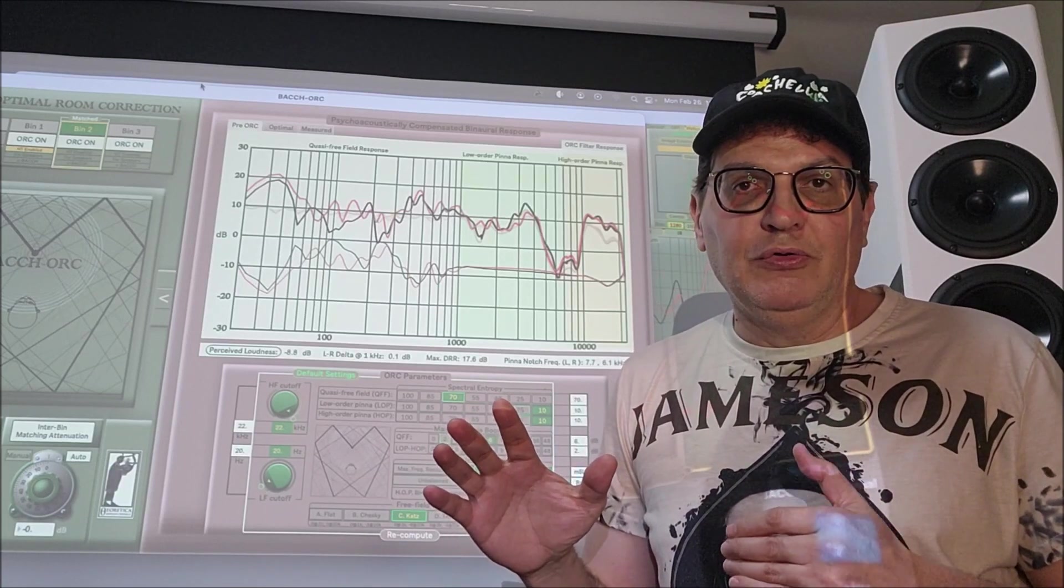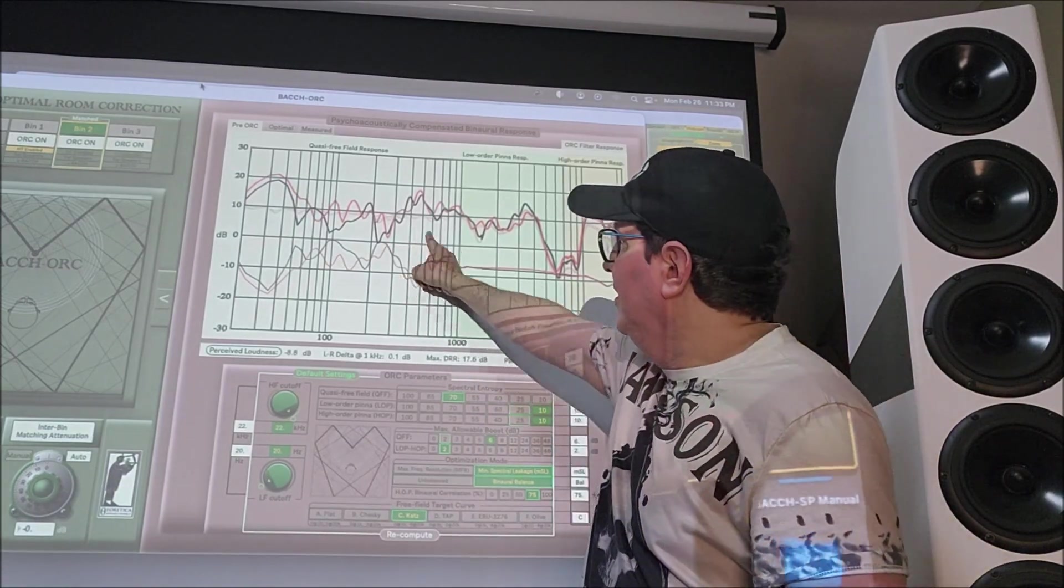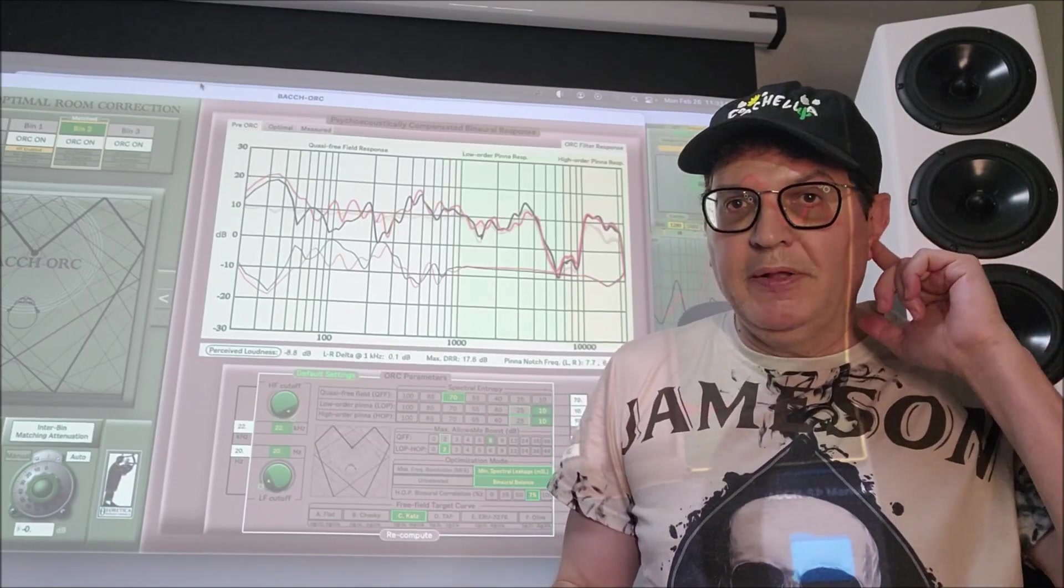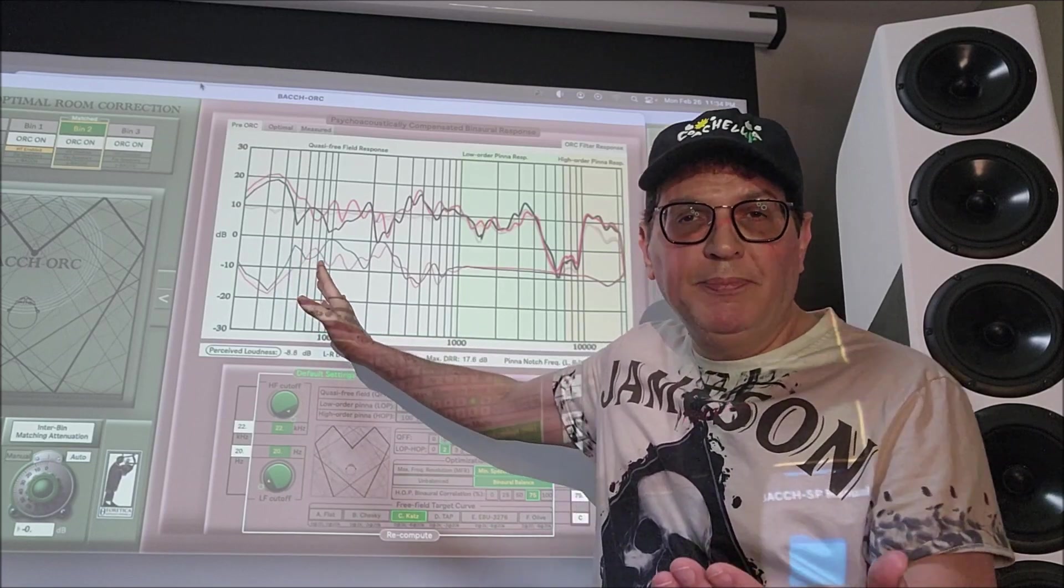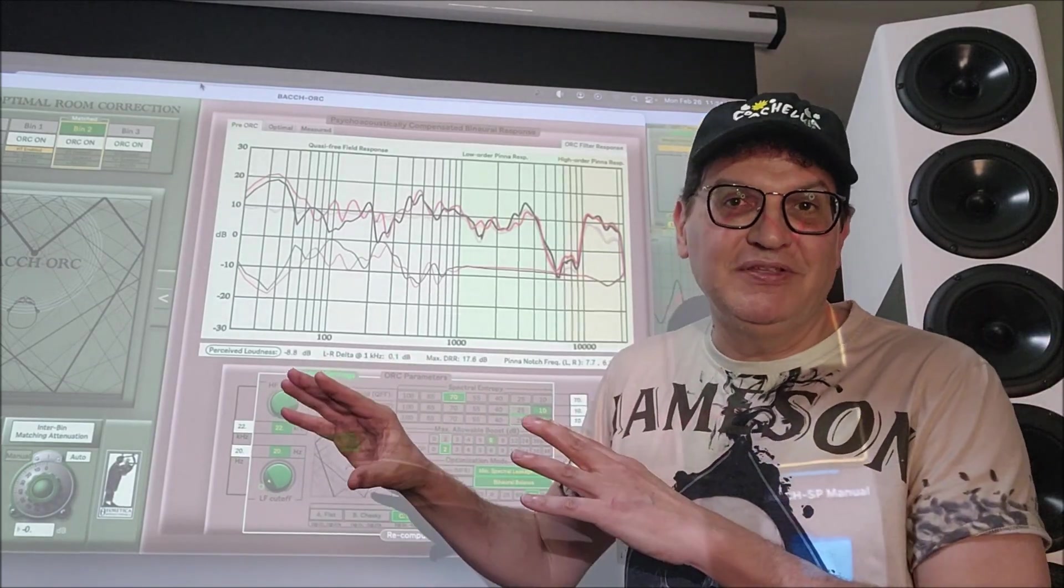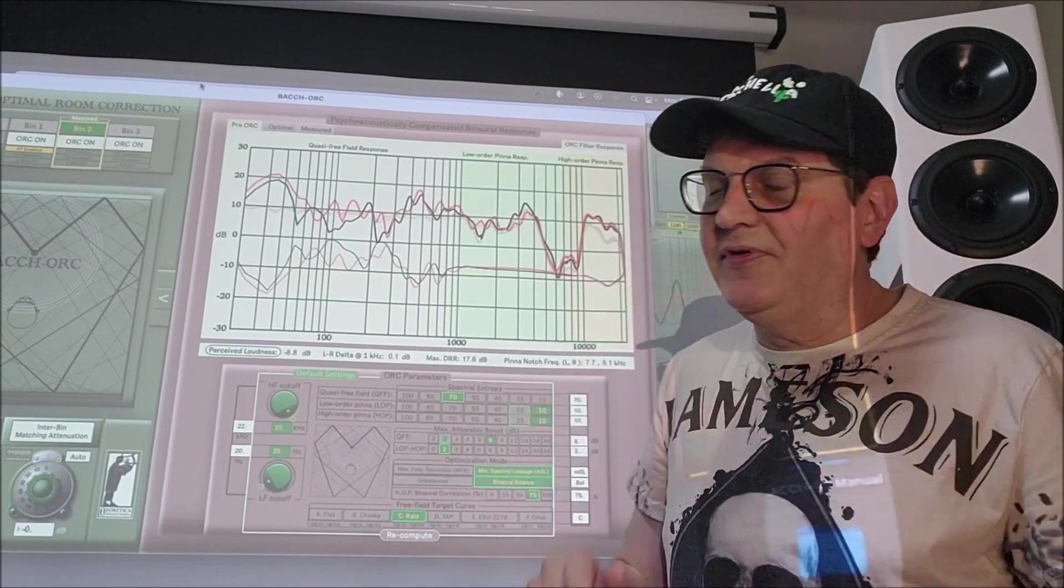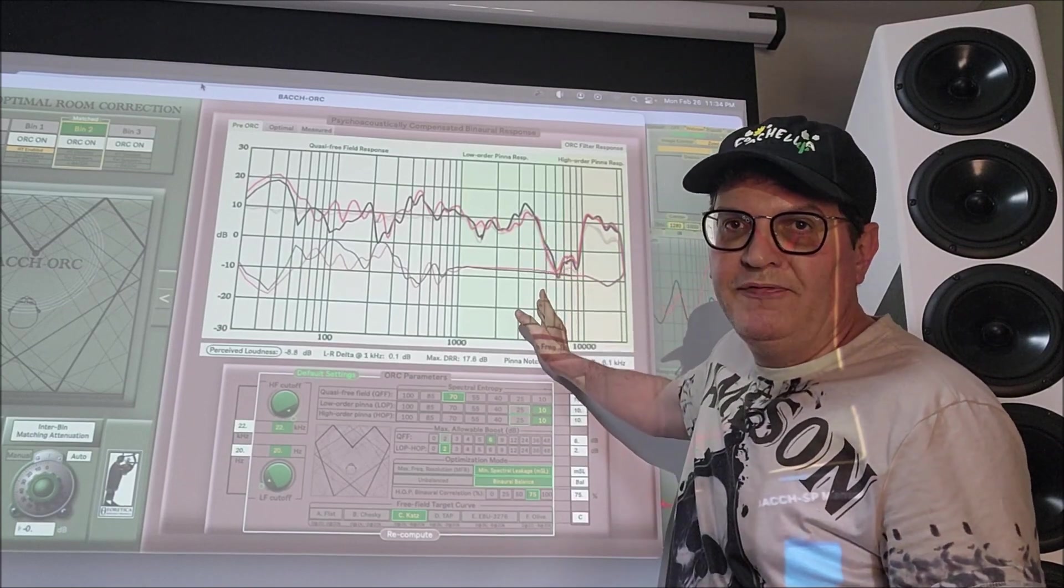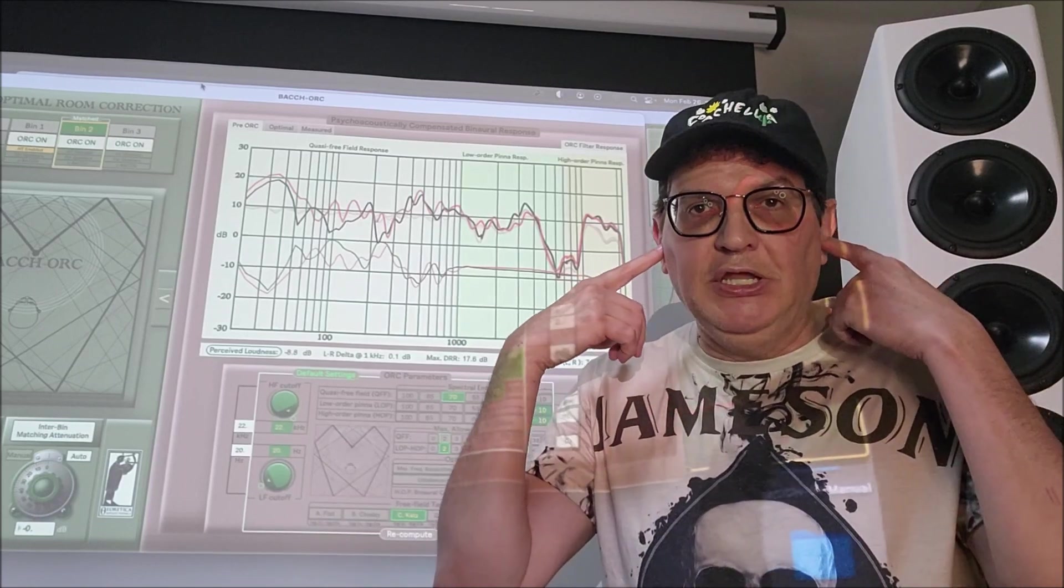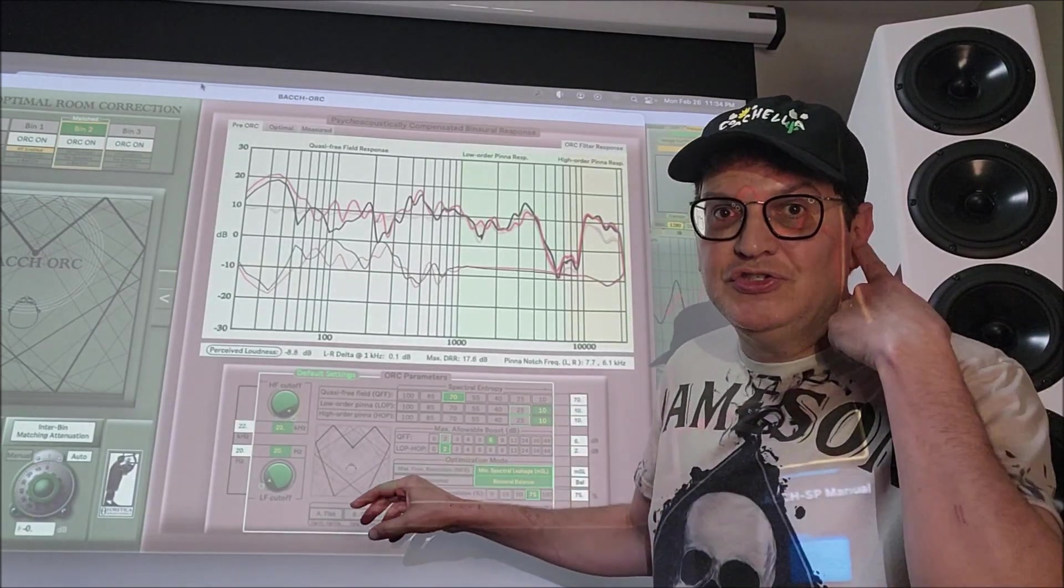One of the things that I want to get out the way first, the secret sauce of what Edgar's doing that no other frequency response DSP is doing, is it's breaking the frequency response into three different parts. You have a quasi free field response, and you can kind of tell by the coloring, mid-range and bass. Those things aren't impacted as much by your head, torso, and ear pinna, so those are going to be treated separately. The second partition that he creates is a low order pinna effect, that is the part of the frequency response that has to do with your head and your torso impacting frequency response. Remember, you're taking these measurements in your ear, this is not just a mic sitting there with no body there.